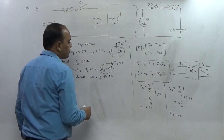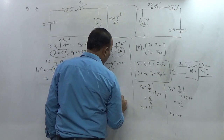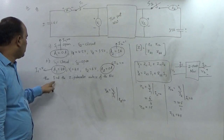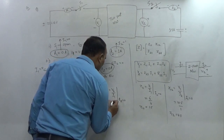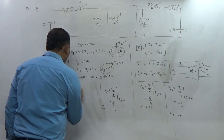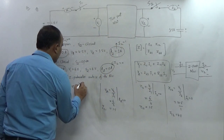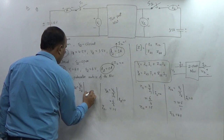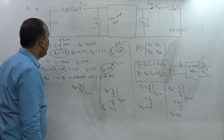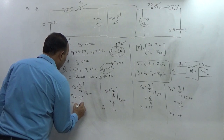For Z21: Z21 = V2/I1 when I2 = 0. With I2 = 0, V2 = 6 and I1 = 4, giving Z21 = 6/4 = 1.5 Ω. For Z22: Z22 = V2/I2 when I1 = 0. With I1 = 0, V2 = 4.5 and I2 = 1, so Z22 = 4.5/1 = 4.5 Ω.